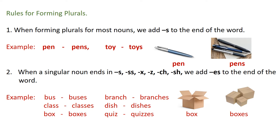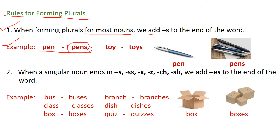Now, the rules for forming plurals. The first rule: for most nouns, we add S to the end of the word. For example, 'pen' becomes P-E-N-S — you are just adding S to the end of the word. Next, 'toy' becomes 'toys' — again, just adding S to the end of the word.